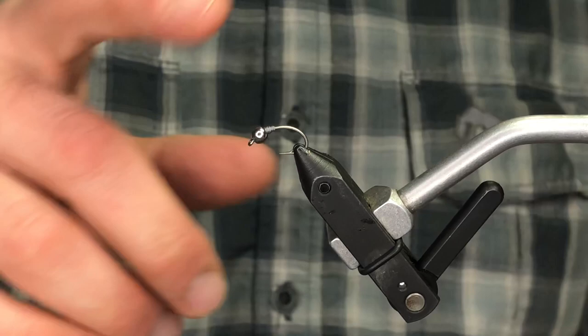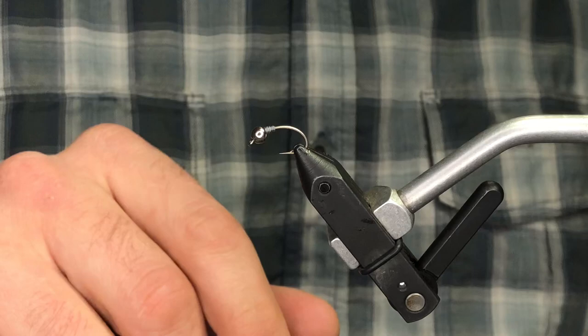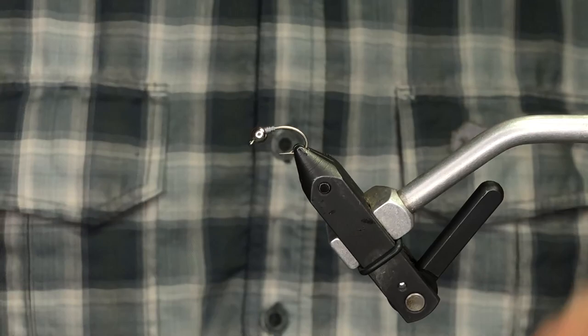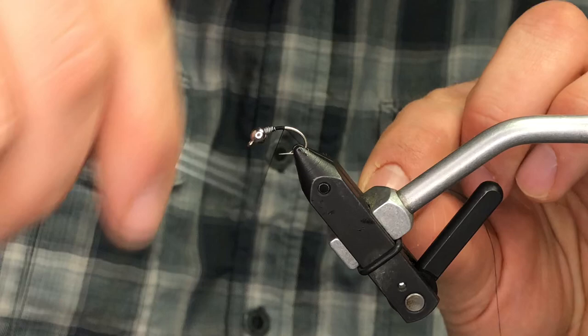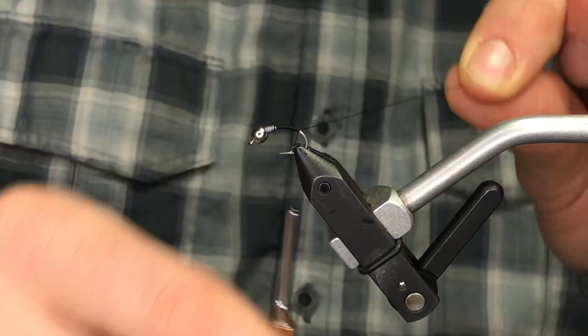So this is a U202 in a size 10 with a 5/32nd bead. You can use tungsten or brass. I got some 0.015 wire in there holding the bead in and we're using some 6-0 in black. Just start your thread right at the lead there. I did about 10 wraps, 12 wraps there. We're not building up a body with thread on this one, so don't worry about getting too crazy.